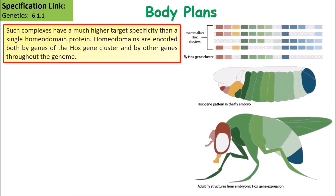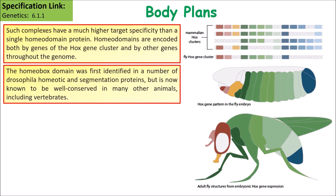Homeodomains are encoded both by genes in Hox gene clusters and by other genes throughout the genome. The homeobox domain was first identified in a number of Drosophila segmentation proteins but is now known to be well conserved in many other animals including vertebrates. Just to point out, Drosophila is a fruit fly.